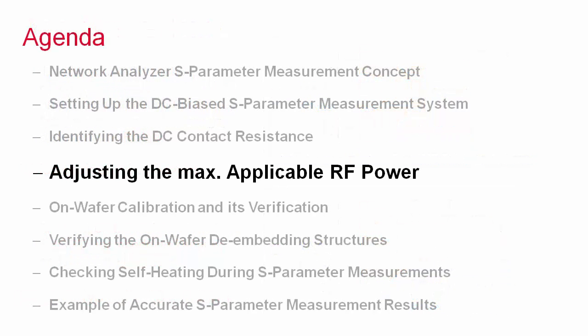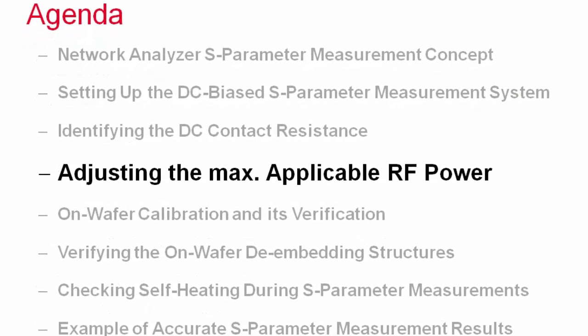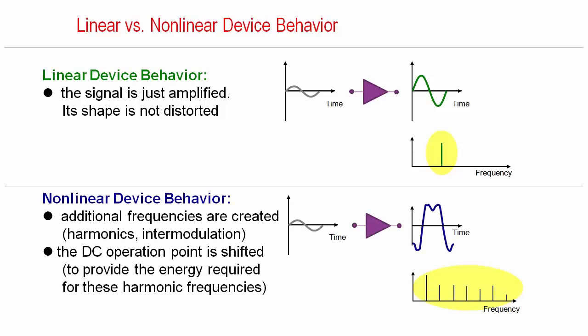Before starting the network analyzer calibration, we have to identify the maximum applicable RF signal power to ensure linear operation of the transistor. This means that during the measurement, the device is not overdriven and all signals are sinusoidal, represented by a single frequency only. A too large RF power would clip the signal and harmonic frequencies would appear. The analyzer, however, measures only the fundamental frequency, resulting in wrong S-parameters.